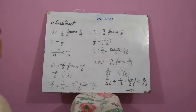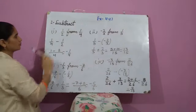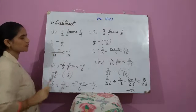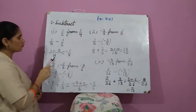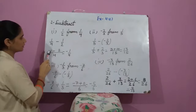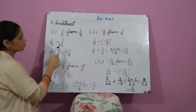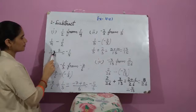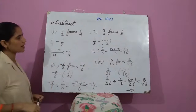Question number 2: Subtract. The first part is 1 upon 2 from 1 upon 4. So we compute 1 upon 4 minus 1 upon 2. First we find the LCM of 4 and 2, that is 4. Then: 4 divided by 4 is 1, and 1 multiplied by 1 is 1; then 4 divided by 2 is 2, and 2 multiplied by 1 is 2. So 1 minus 2 gives minus 1 upon 4. This is the required answer.